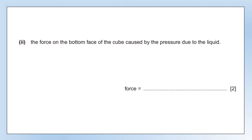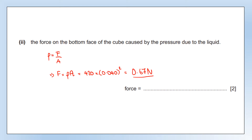The force on the bottom face of the cube is caused by the pressure due to the liquid — essentially particles of the liquid colliding with that surface. We want to calculate that force. We know the pressure and we know the area, so we rearrange our equation and plug numbers in. Some people forgot to square the side length to get the area — the side of the cube is 0.04, so you needed to square it. There's one mark for correct working and one for the correct answer with unit.